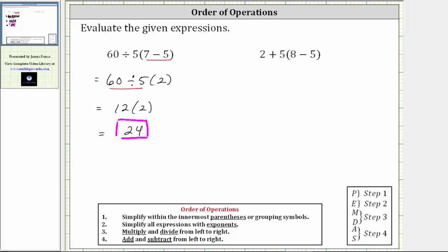Let's look at a second example. Again, the first step is to simplify within the innermost parentheses or grouping symbols. Therefore, we begin by determining this difference inside the parentheses. Eight minus five equals three. The expression simplifies to two plus five times three.